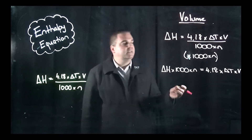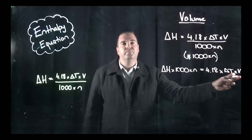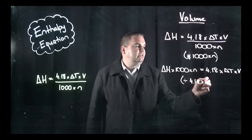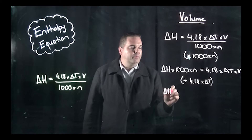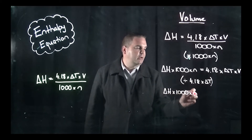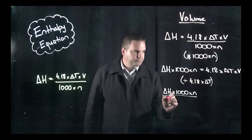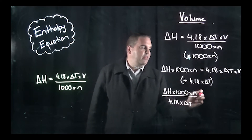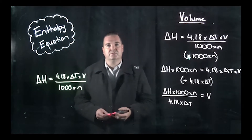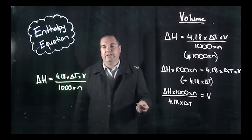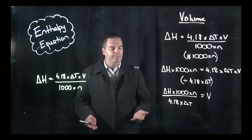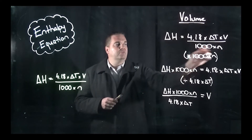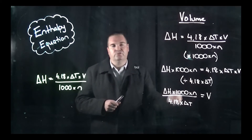Now we need to get rid of the 4.18 and delta T, because we're trying to keep the volume. So we divide both sides by 4.18 times delta T, and we end up with enthalpy times 1,000 times the number of moles, divided by 4.18 times the change in temperature — that gives us the volume. It's basically exactly the same process as calculating temperature. I suggest you work through the rearrangement each time rather than trying to memorise the different equations.